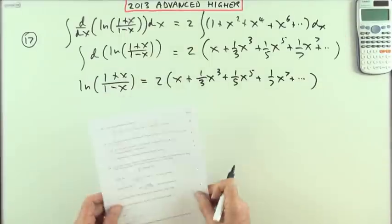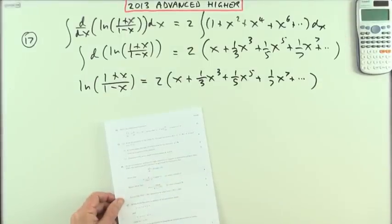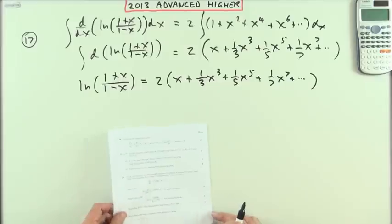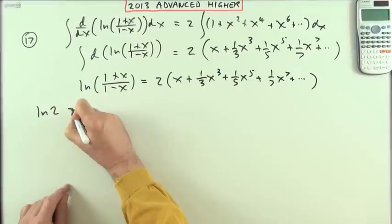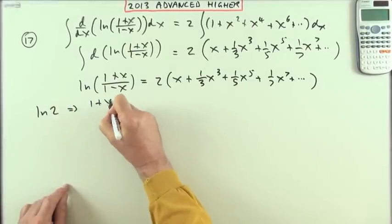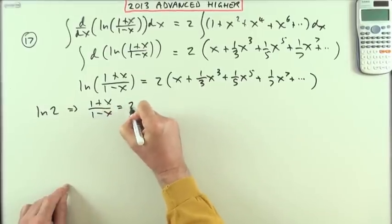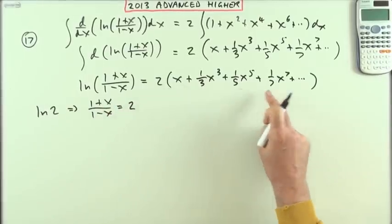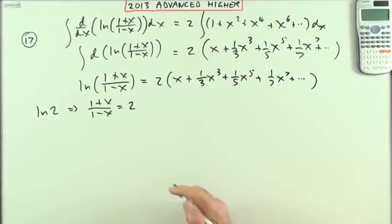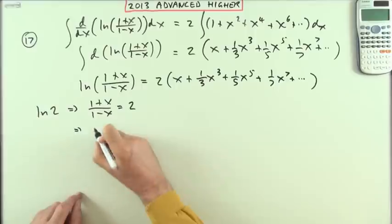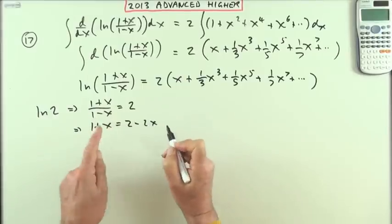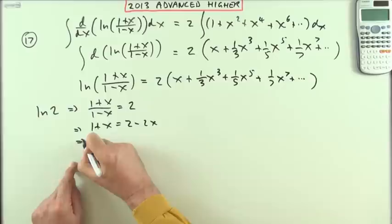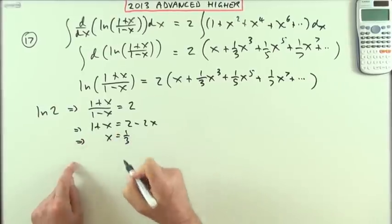The second part said show how this series can be used to evaluate ln(2). If I want ln(2), that means I want (1+x)/(1-x) to produce a 2. So 1+x = 2(1-x), which gives 1+x = 2-2x, so 3x = 1, which means x = 1/3.